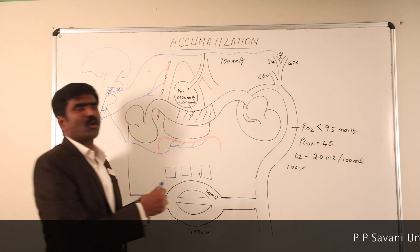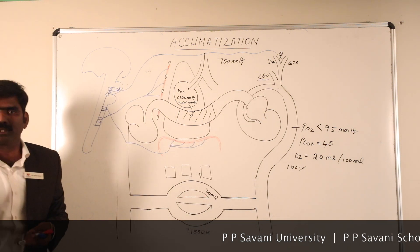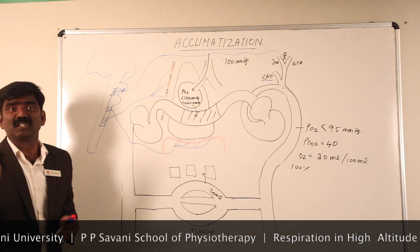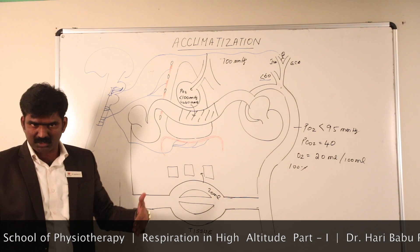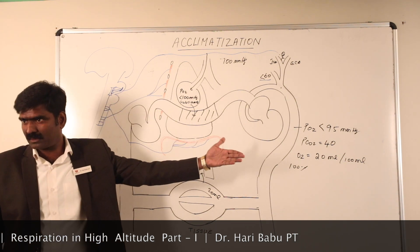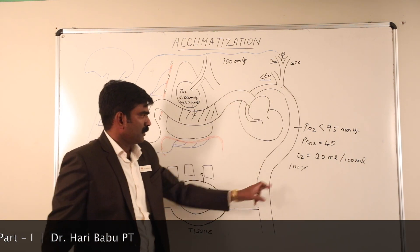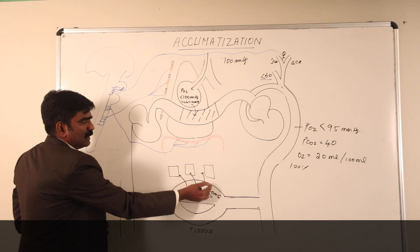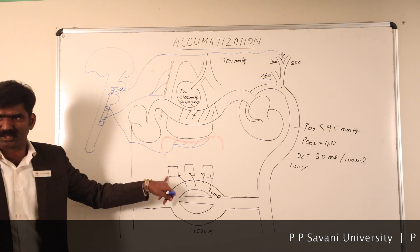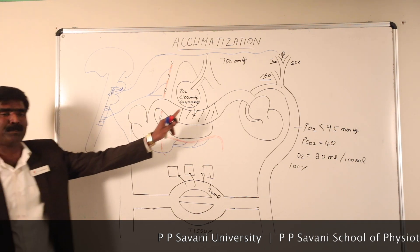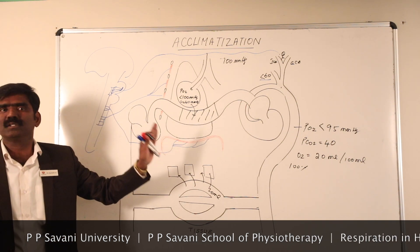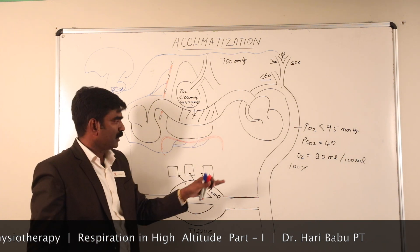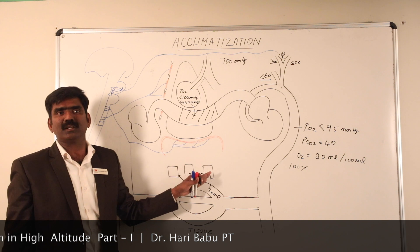If the partial pressure of oxygen in arterial blood goes down, the condition is called hypoxemia — not hypoxia, but hypoxemia. Hypoxemia means the partial pressure of oxygen is reduced in arterial blood. Because the blood is now carrying less oxygen, the tissues receive less oxygen, and that condition is called hypoxia. The key difference: hypoxemia is low O2 in arterial blood; hypoxia is insufficient O2 delivery to tissues.